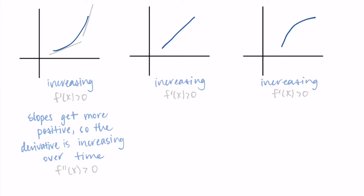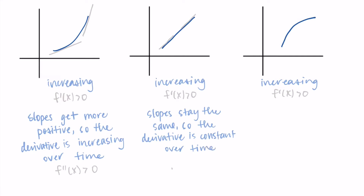On this first graph, the first derivative is positive since the function is increasing, and the second derivative is also positive because the derivative is increasing over time. On the second graph, we are also increasing so the first derivative is greater than zero. But here, drawing two tangent lines, I notice the slopes stay the same over time — the derivative is constant. So the second derivative, which tells us how the first derivative is changing, will be equal to zero.